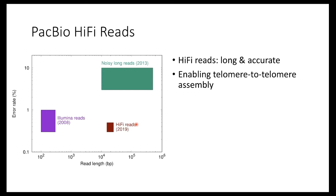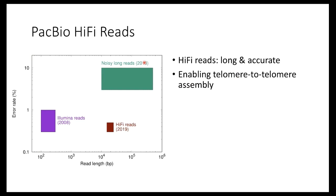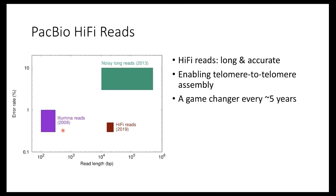In 2019, just a year after the initial binning assembly, PacBio introduced HiFi reads — also called high-fidelity CCS reads. These reads are long and accurate. On a plot with read length on the x-axis and error rate on the y-axis in log scale, short reads are short and accurate, long reads are long but have very high error rates, and HiFi reads combine the advantages of both — not as long as long reads, but more accurate than short reads. This is a game changer. Most existing assemblers were not taking full advantage of this high accuracy, and that's why we developed the hifiasm assembler.